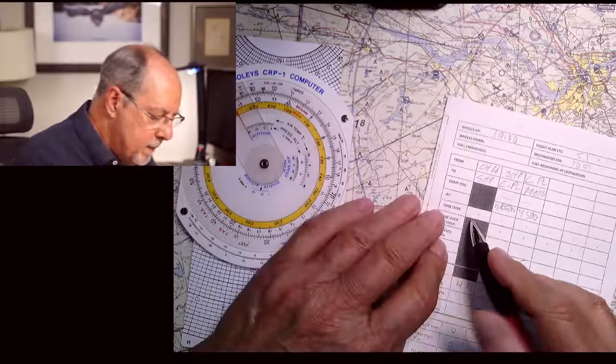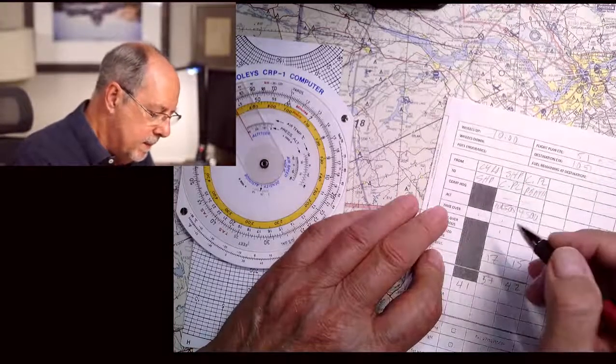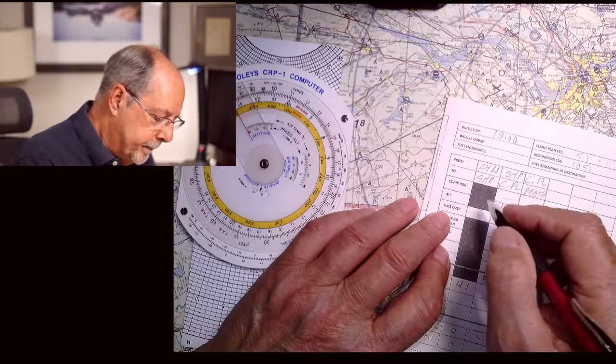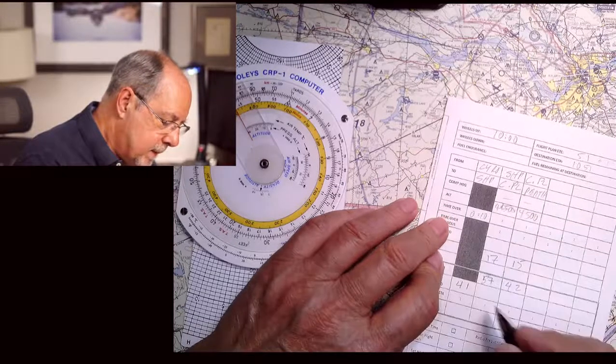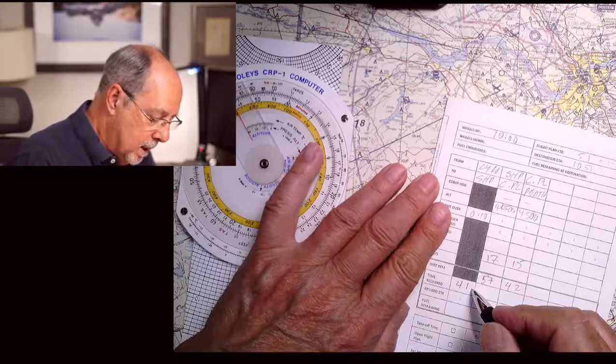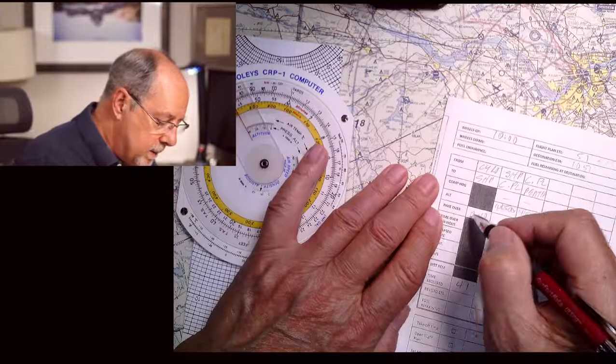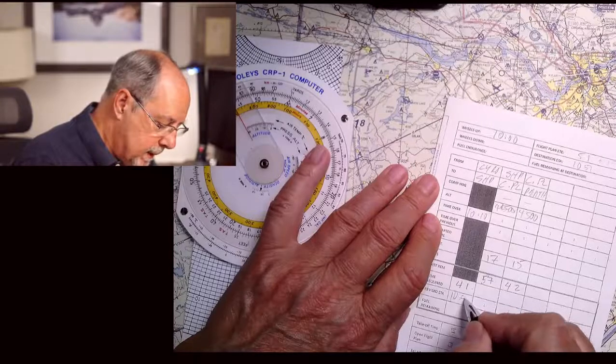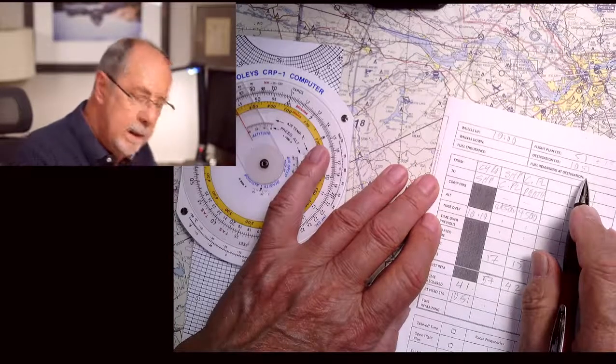So time over. Let's say we depart at 10 o'clock and it takes us 10 minutes to get to our set heading point, Constance Lake. So 10 minutes plus 41 minutes, our required time. Our revised ETA is going to be, time over would be 10:10 plus 41 would be 10:51. Hey, great. Our revised ETA is right on.